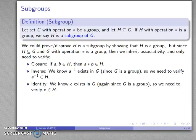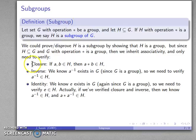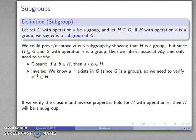Well, actually we can be a little bit more efficient. As long as we verify closure and inverse, we know that the inverse of anything is in H, and the product a star a inverse by closure has to be in H as well, and this is the identity. So once we verify closure and inverse, we get identity for free. If we verify these two properties, then H is going to be a subgroup.